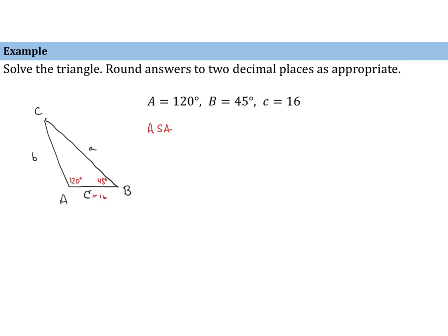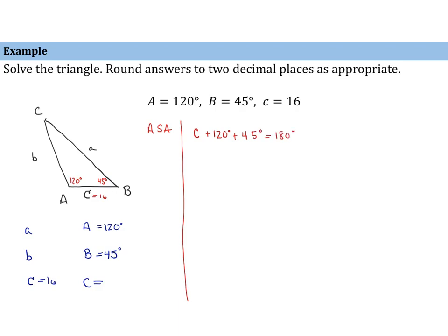Let's take an inventory of what we know. We have sides a, b, and c, and angles A, B, and C. We know angle A is 120 degrees, angle B is 45 degrees, and side c is 16 in length. Immediately we know we can find angle C: C plus the other angle measures must equal 180 degrees, so angle C must equal 15 degrees.